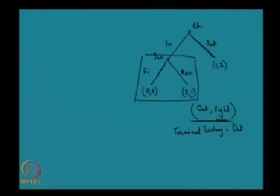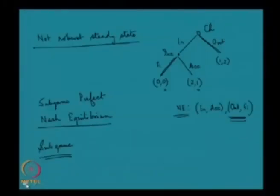So to consider any strategy profile as a candidate for subgame perfect Nash equilibrium, I must look into every possible subgame of the entire game and check whether the strategies in that profile generate equilibrium in each and every subgame. That is what one means by subgame perfect Nash equilibrium. What I have done so far is give an illustration — a vague definition — but now I shall go to a more concrete and methodical definition.